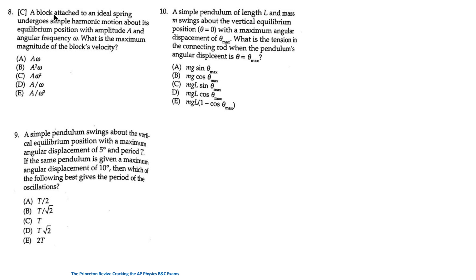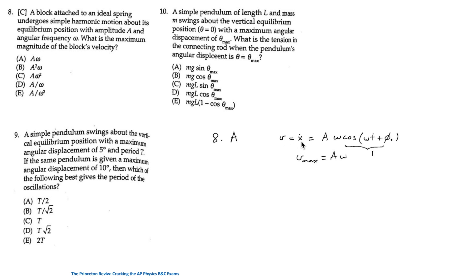For question 8: a block attached to an ideal spring undergoes simple harmonic motion about its equilibrium position with amplitude A and angular frequency ω. What is the maximum magnitude of the block's velocity? The velocity is the time derivative of the displacement equation. The derivative is maximum when cosine of the angle equals 1, so the maximum velocity is Aω. The answer is A.